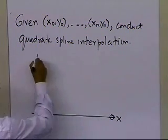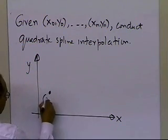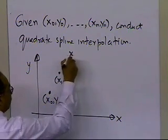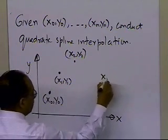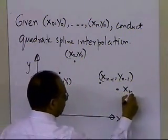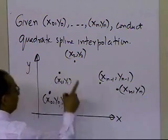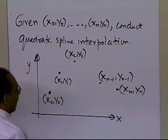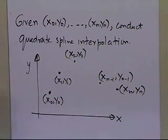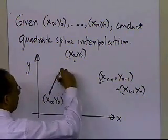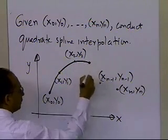Let's illustrate this in a plot. We have y as a function of x, with points x0, y0; x1, y1; x2, y2; all the way up to x of n minus 1, y of n minus 1, and finally x of n, y of n. All the x values are in ascending order, so if the data is not given in that form, you have to sort it. In linear spline interpolation we drew straight lines; in quadratic spline interpolation we draw a second-order polynomial through consecutive data points — that's the only difference.